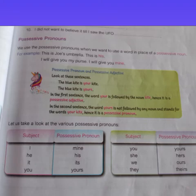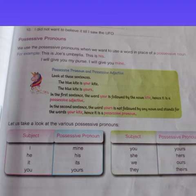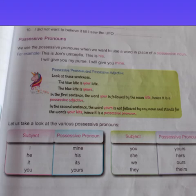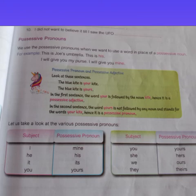Possessive pronouns and possessive adjectives are discussed on page number 62. Look at these sentences: 'The blue kite is your kite' versus 'The blue kite is yours.' In the first sentence, the word 'your' is followed by the noun 'kite' — hence it is a possessive adjective. In the second sentence, 'yours' is not followed by any noun and stands for the words 'your kite' — hence it is a possessive pronoun.